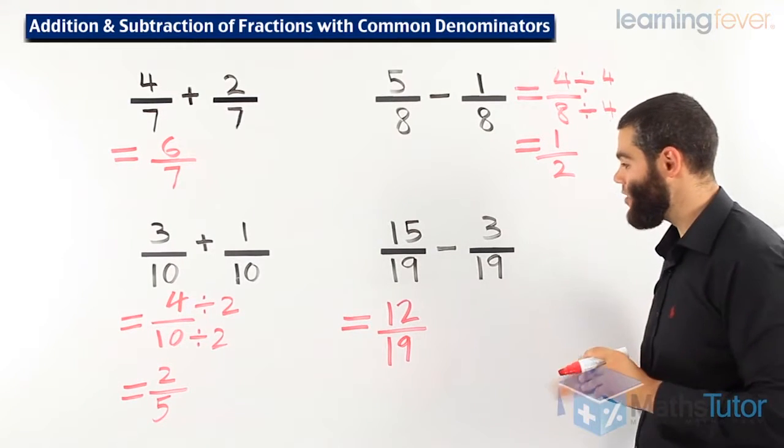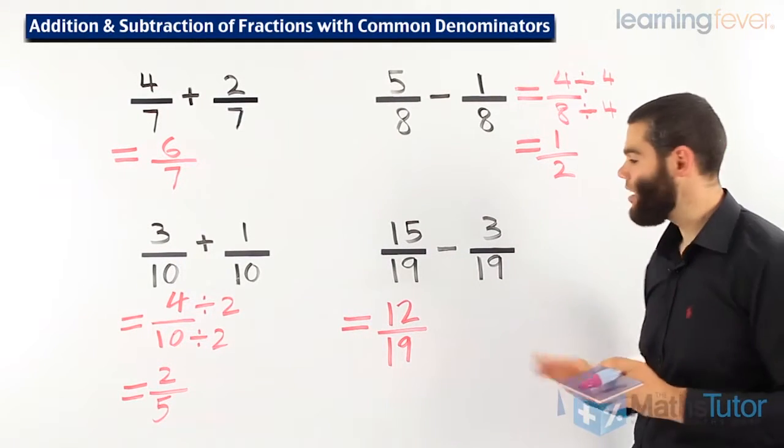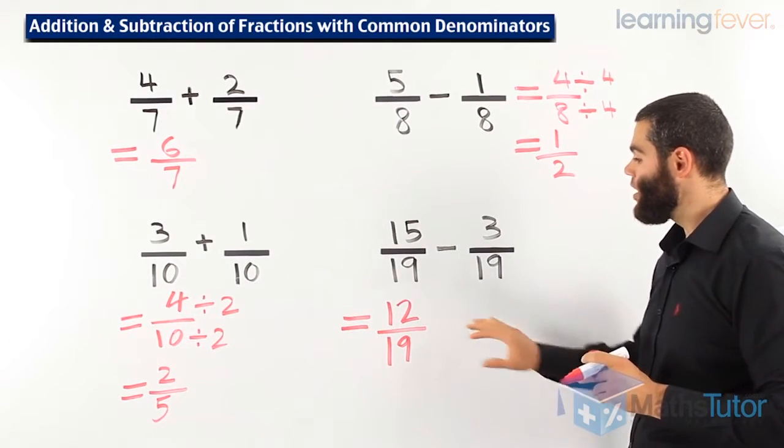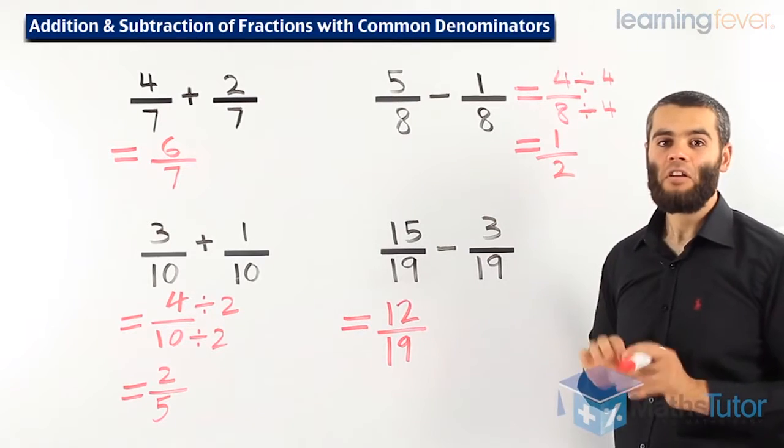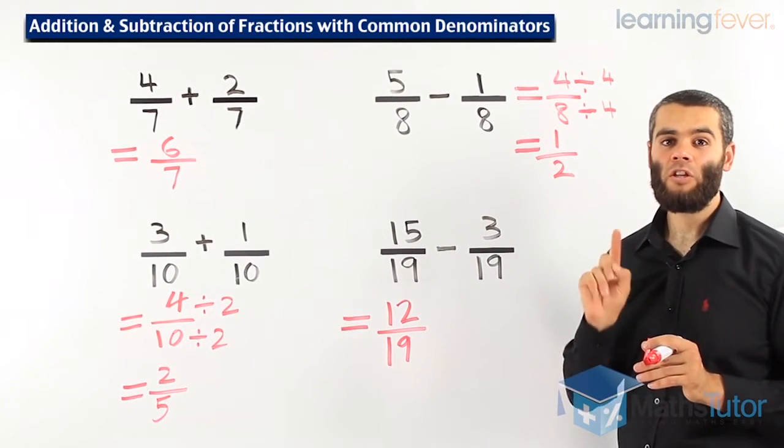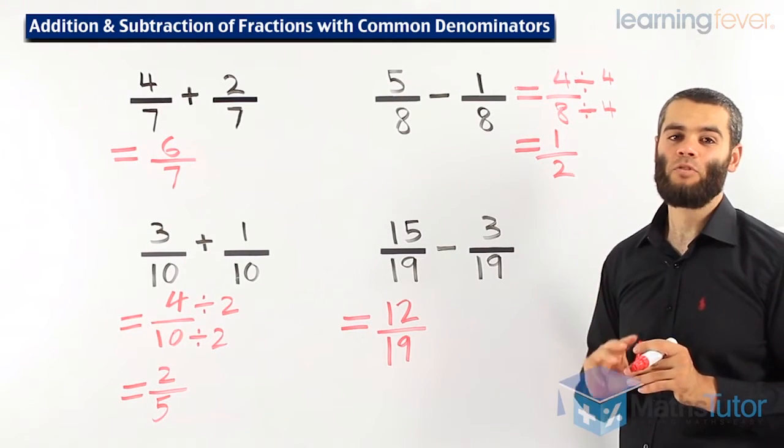We can't simplify it any further. There is no highest common factor. Remember, 12 over 19 is complete. This is our answer in full. This way, we'll get our marks without any problem. We'll get them all right. Remember, we look for common denominators when we're adding and subtracting fractions.